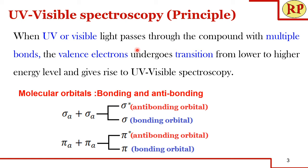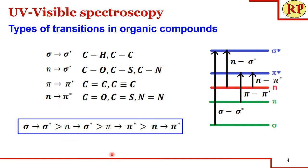Let us understand the principle behind UV-visible spectroscopy. When UV or visible light passes through a compound with multiple bonds, the valence electrons undergo transition from the lower to higher energy level, giving rise to UV-visible spectroscopy. We'll see how molecular orbitals form from atomic orbitals. When two atomic orbitals combine, they form two molecular orbitals — one with lower energy called the bonding orbital and the other with higher energy called the anti-bonding orbital. Both sigma and pi bonds are shown.